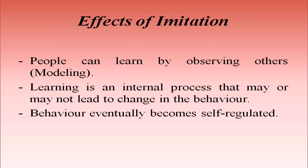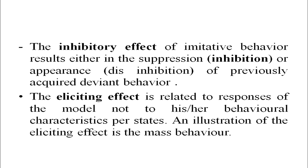How does imitation affect learning? People can learn by observing others — this can be called modeling. Like girls at adolescence want to imitate their favorite heroines, and boys their favorite heroes. Learning is an internal process that may or may not lead to a change in behavior — meaning every learned thing cannot bring a permanent change in behavior. Behavior eventually becomes self-regulated by practicing and by imitating again and again. The inhibitory effect of imitative behavior results either in the suppression (inhibition) or appearance (disinhibition) of previously acquired deviant behavior. The eliciting effect is related to responses of the model, not to his or her behavioral characteristics.